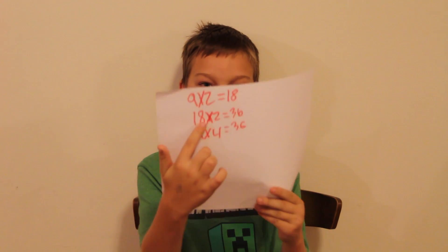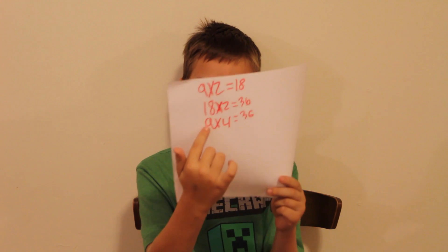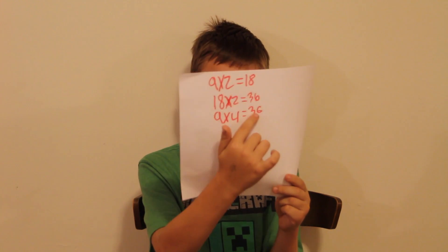Remember 9 times 2, which was 18? Now we'll do 9 times 4. 9 times 4 is the same as 18 times 2, or 18 plus 18. 18 plus 18, or 18 times 2, is 36. And 9 times 4 is 36 too, which is our answer.